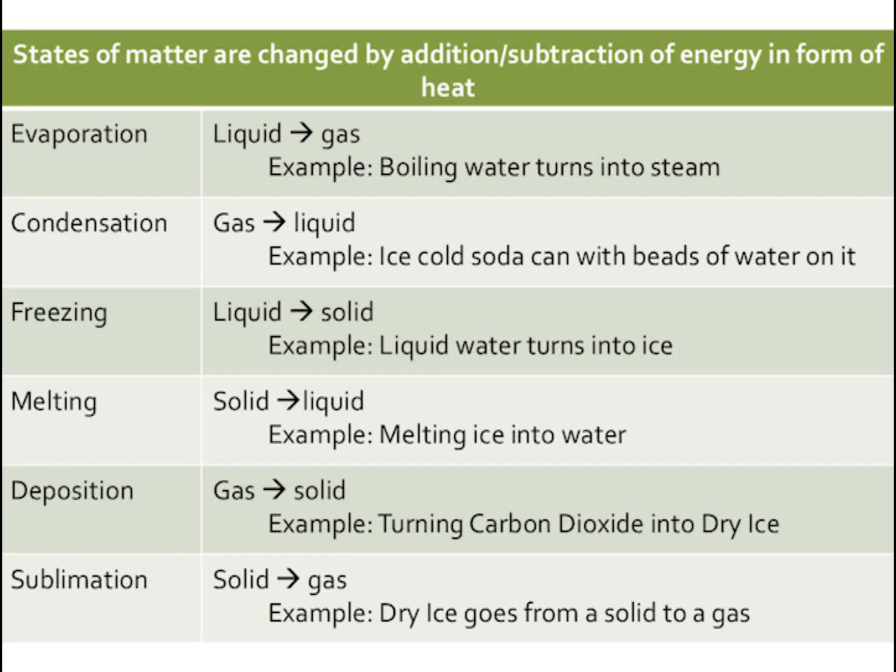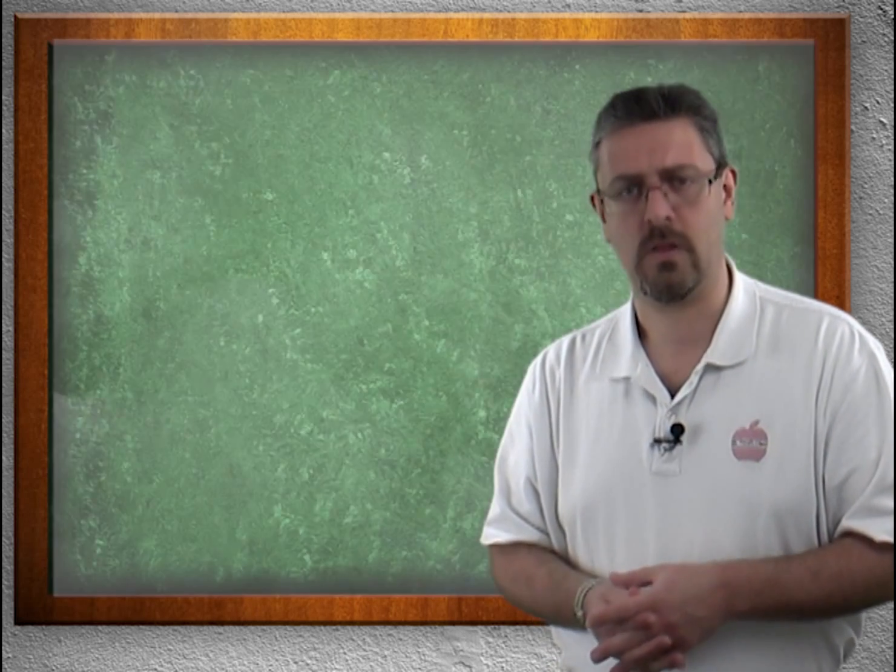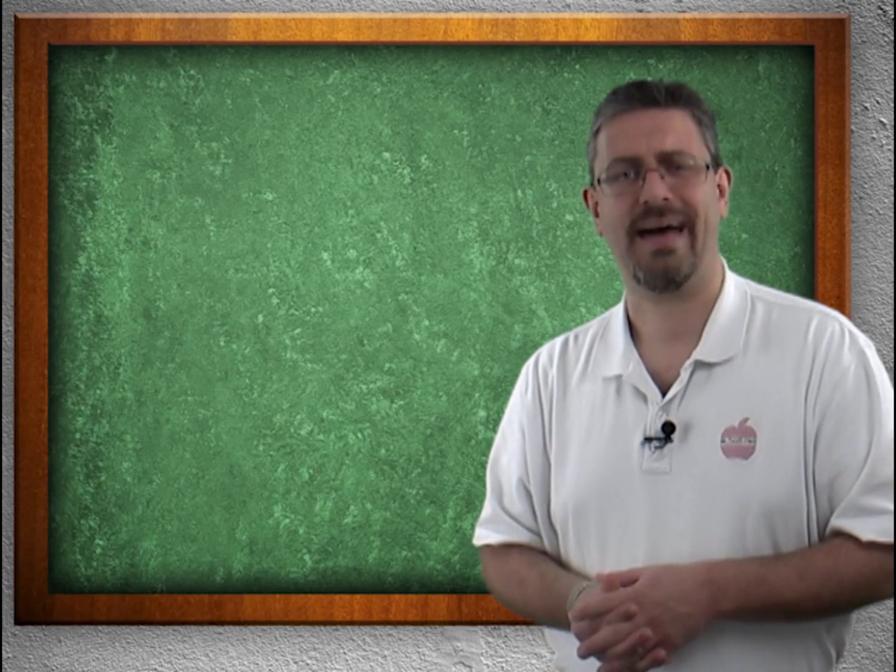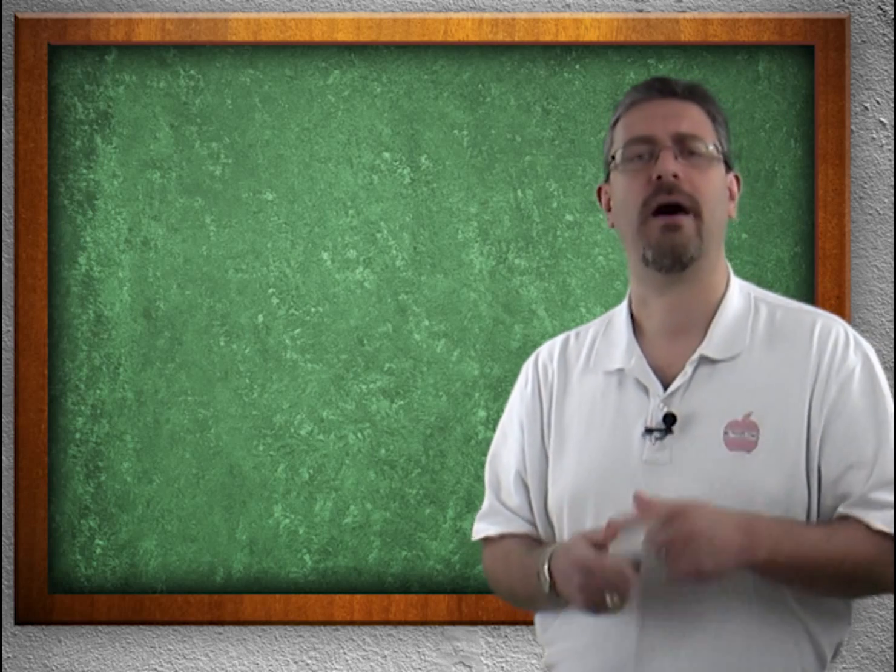Deposition and sublimation are a little bit more odd. We're not familiar with those typically. Deposition goes from a gas to a solid. This is how we make dry ice. We take carbon dioxide and turn it into dry ice. And sublimation goes from a solid to a gas. The dry ice goes from the solid into the gas, giving us that really cool, cheesy horror movie effect. That's going to conclude our states of matter. Come back and we're going to learn about atoms.